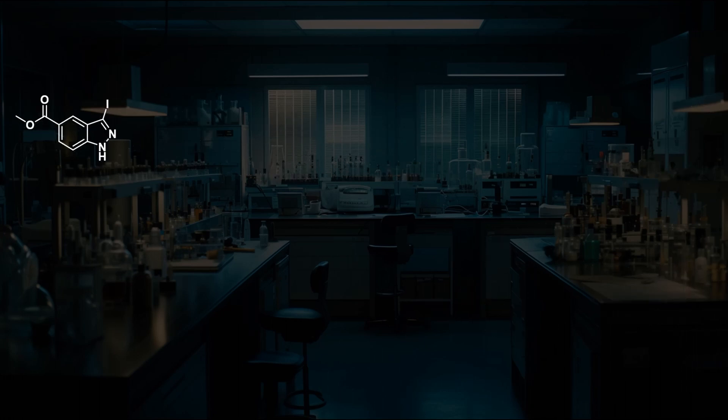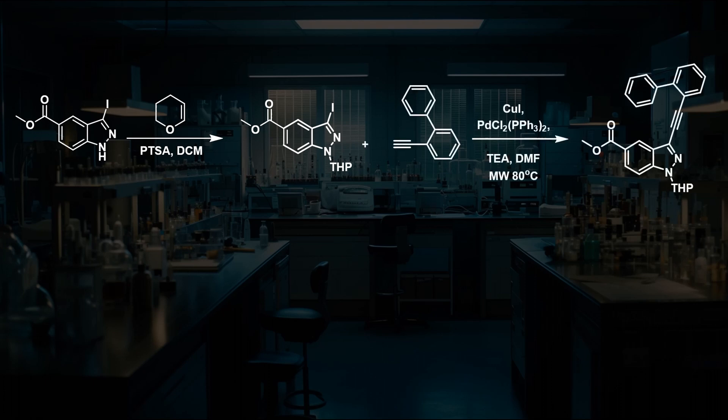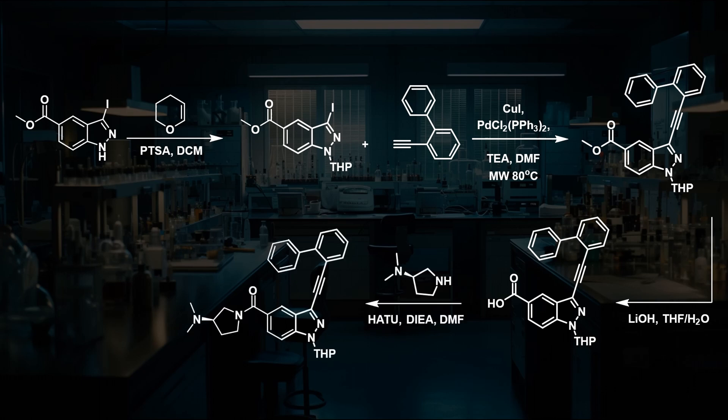The group then moved to a second method, starting with the iodo ester core, and first protecting the indazole with a THP group, presumably to reduce side products in the Sonogashira reaction. The ester could then be hydrolyzed, allowing for the amide coupling to take place, with the deprotection of the THP group under acidic conditions as the final step.